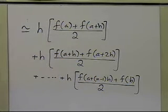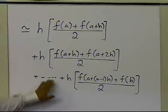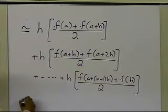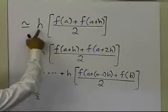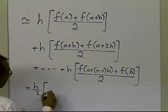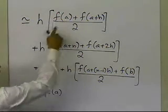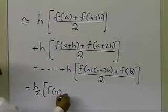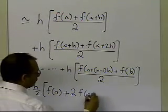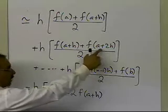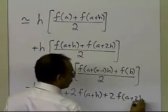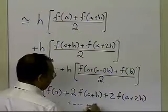That's what you get for all the individual integrals. You can see that h divided by 2 is a common factor throughout. Taking that out, you recognize that f(A) appears only once, but f(A plus h) appears once in the first term and once in the second term, so it becomes 2 times f(A plus h). Similarly, f(A plus 2h) appears twice, giving 2 times f(A plus 2h), all the way up to f(B).